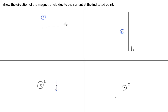And in the last example, we have a current coming out of the screen. So pointing our thumb out of the screen and curling our fingers around, where the point is, your finger should point down and towards the right. So the direction of the magnetic field at this point is down and to the right.